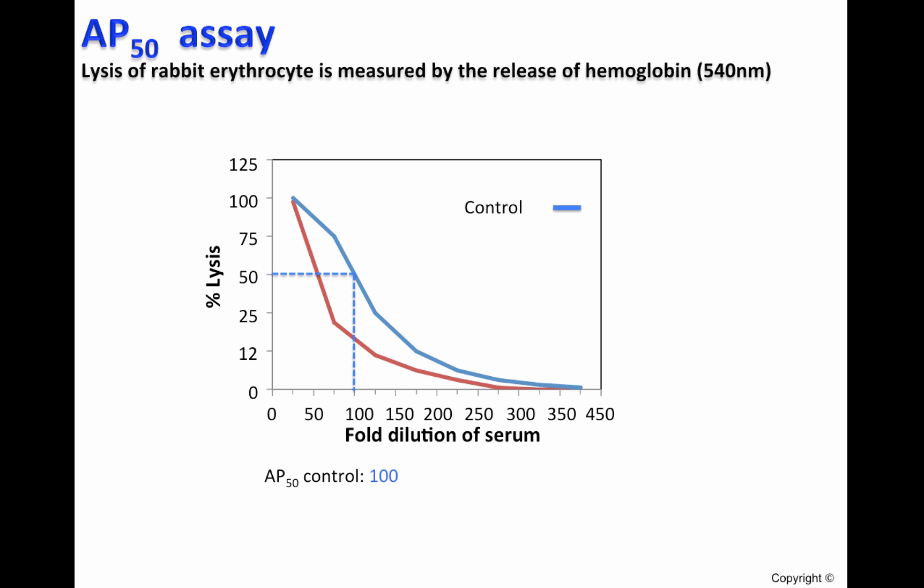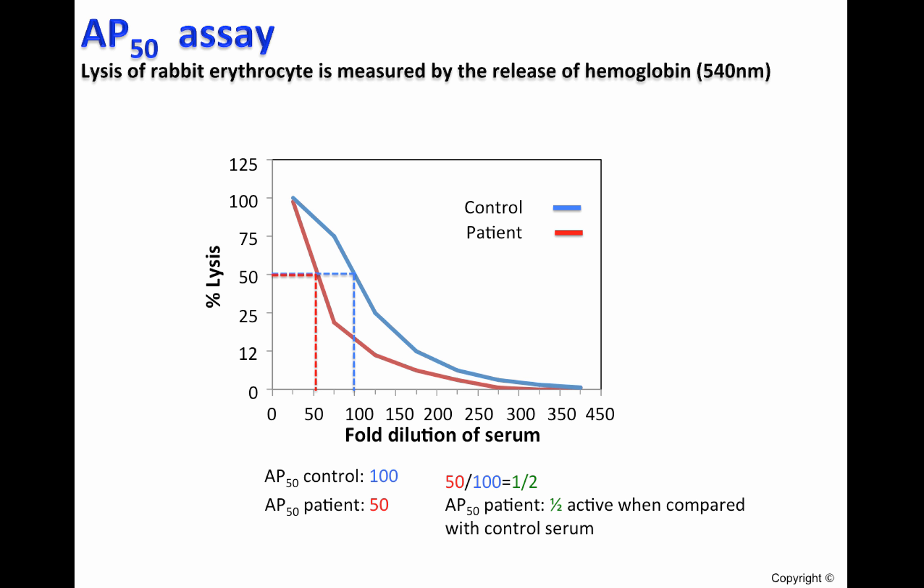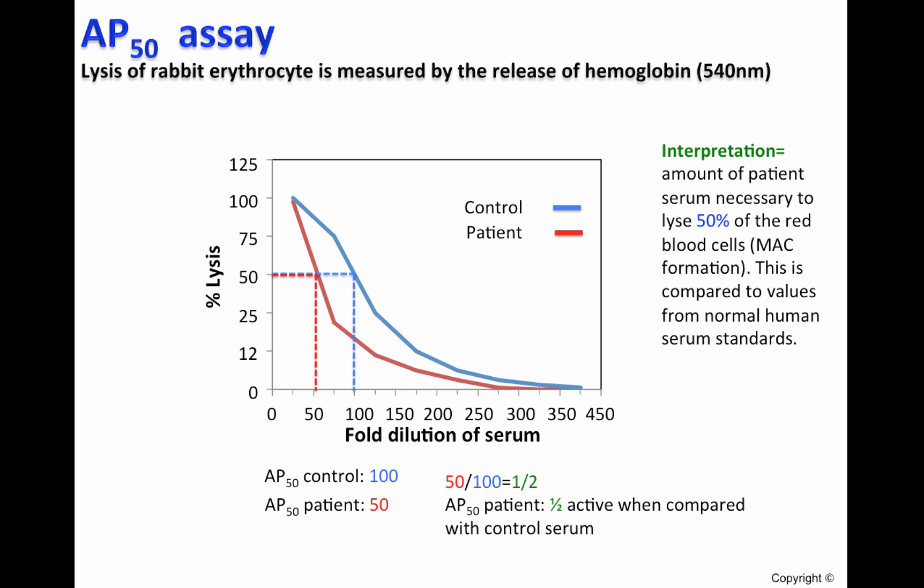A patient sample is compared with this control or standard. In this example, we can observe that 50% lysis is observed when the serum is diluted 50 times, which means that the patient's serum has a deficiency of complement components of the alternative pathway — the patient's serum is half as active when compared with the control. The reduction of AP50 in this patient may be due to the reduction of certain complement components of the alternative pathway, malfunction, or certain autoimmune diseases such as lupus, which is covered in another video.